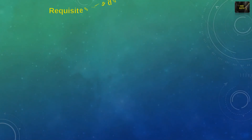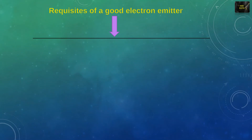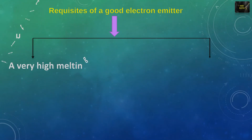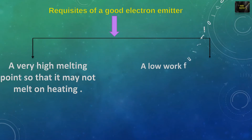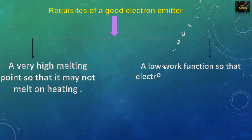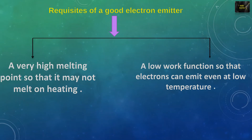Here are the conditions necessary for being a good electron emitter: a very high melting point so that it may not melt on heating, and a low work function so that electrons can emit even at low temperatures.